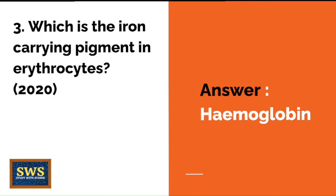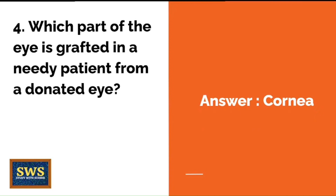Question 3: Which is the iron-carrying pigment in erythrocytes? This came in 2020. The correct answer is hemoglobin. Question 4: Which part of the eye is grafted in a needy patient from a donated eye? The correct answer is the cornea.